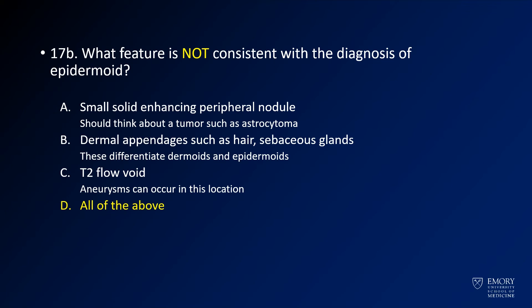In this case, all of the listed features are not consistent with epidermoid. If you have an enhancing nodule, you should think about astrocytoma. Dermal appendages are seen in dermoids. Flow voids should make you think about an aneurysm — this is a relatively common location, and you can get an anterior inferior cerebellar artery or SCA aneurysm here, so definitely be attuned to that.